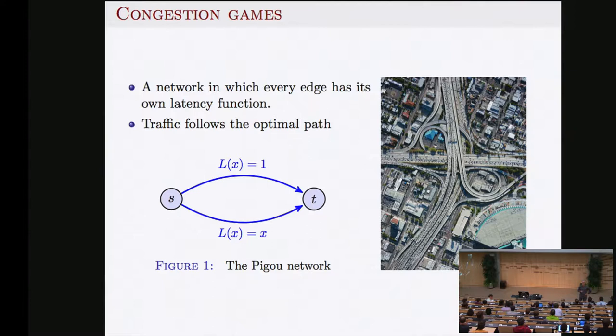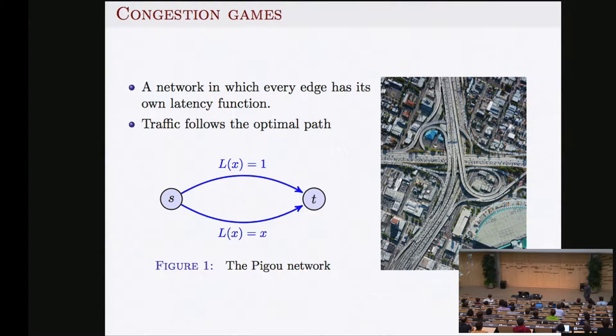Here is a very simple network called the Pigou Network, studied about 100 years ago, long before game theory. The latency function on one path is one — imagine you want to go from point S to point T. You have two choices: go on a surface road outside the city, which takes one hour no matter the traffic, or go through the city where the latency is proportional to traffic X.